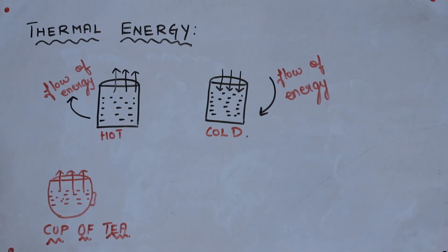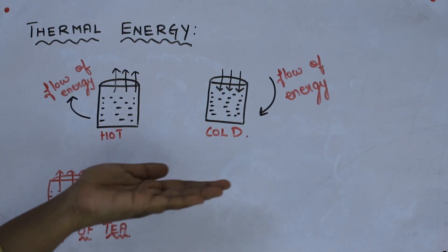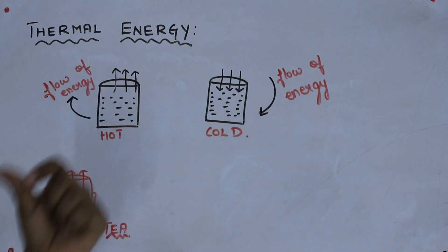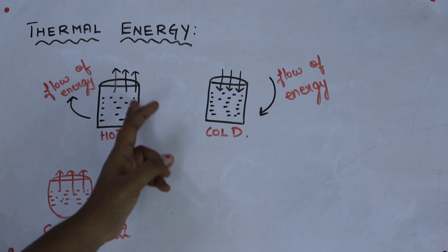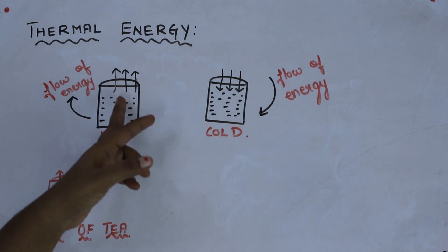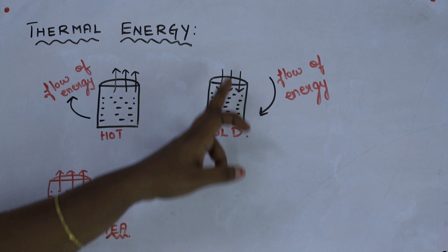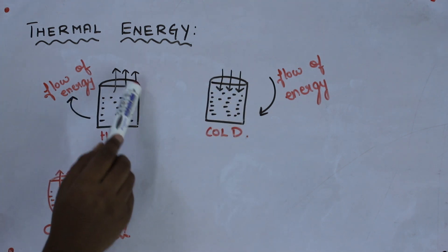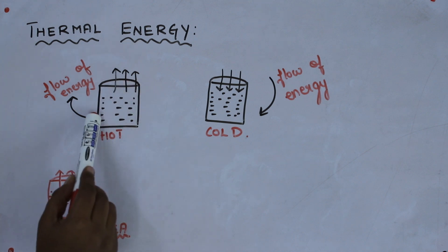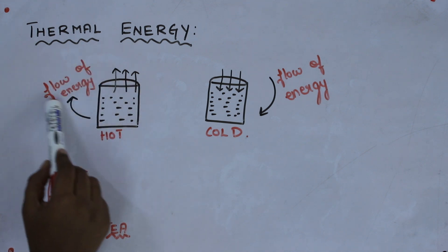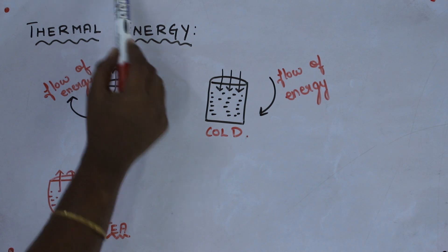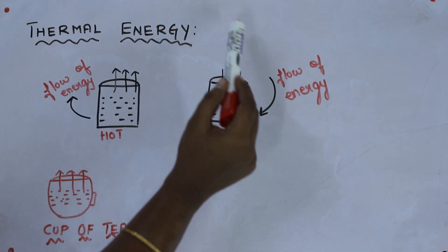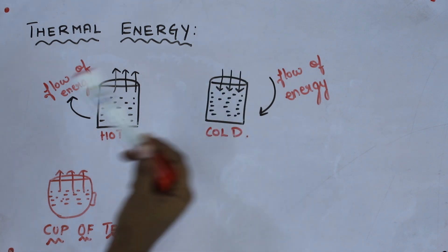Now we are going to see thermal energy. Again, I am going to consider two bodies. One is hot body and one is cold body. Here you can see the arrow mark. Here the arrow mark is facing upward and in the cold body, the arrow mark is facing downward. In the sense, from the hot body, the flow of energy has been transferred from here to the environment. Here, the flow of energy is from the environment to the cold body.